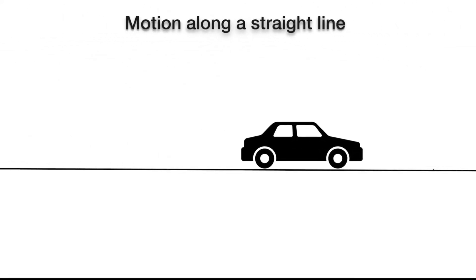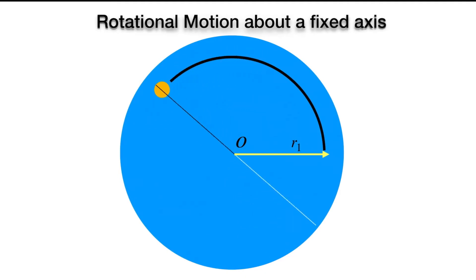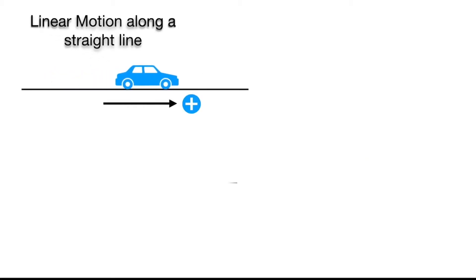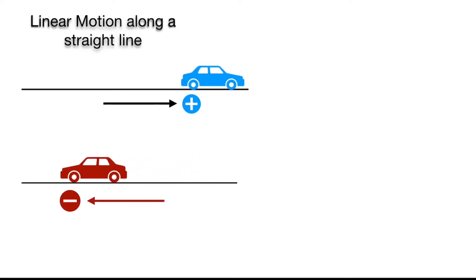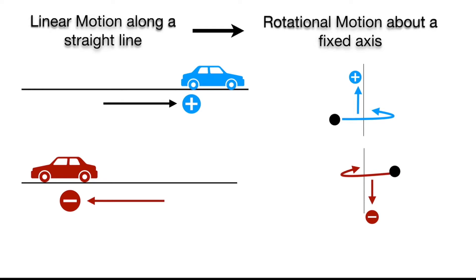There are a lot of similarities between motion along a straight line and rotational motion about a fixed axis. In linear motion, a car can move in two directions: the positive direction and the negative direction. Similarly, in rotational motion about a fixed axis, an object can rotate in the counterclockwise direction, which is the positive direction, or in the clockwise direction, which is the negative direction.